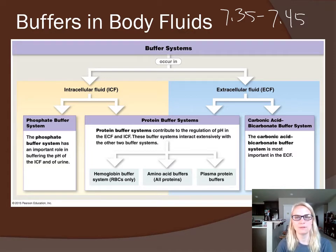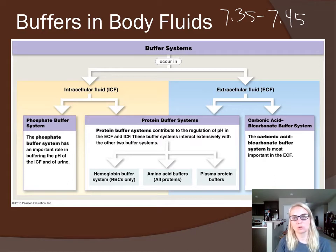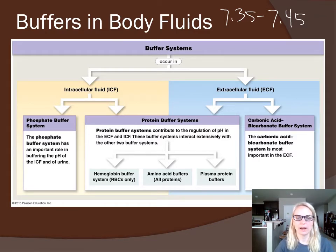Most of this buffer comes from bicarbonate ions entering the blood via CO2 transport. Going back to the respiratory system: CO2 moves from tissues into red blood cells, dissociates into hydrogen ions and bicarbonate, and the bicarbonate gets chloride-shifted out into the plasma. That's where this slightly alkaline number comes from — transporting CO2 from tissues to lungs as bicarbonate ion.